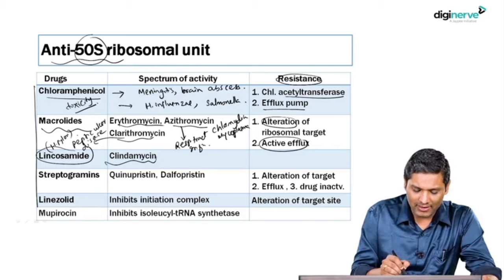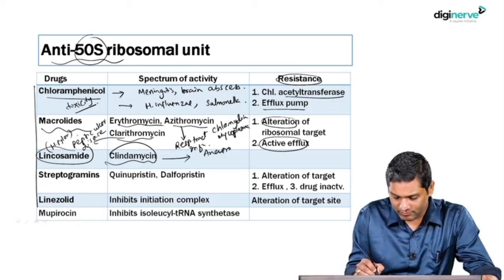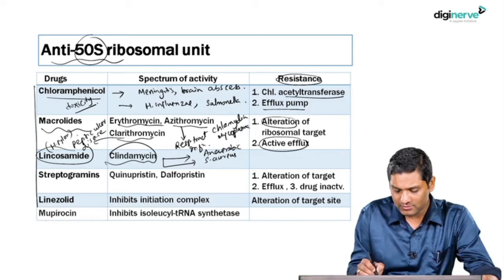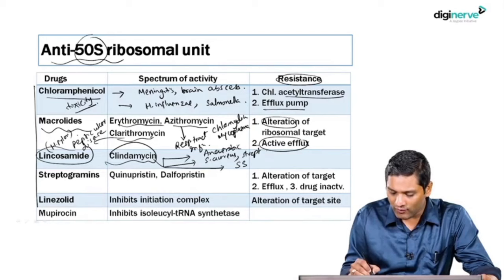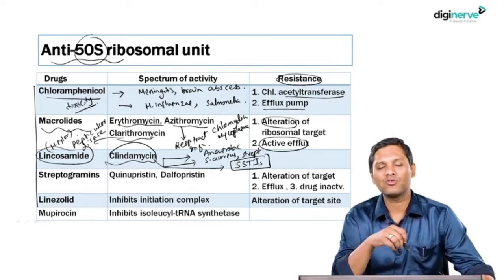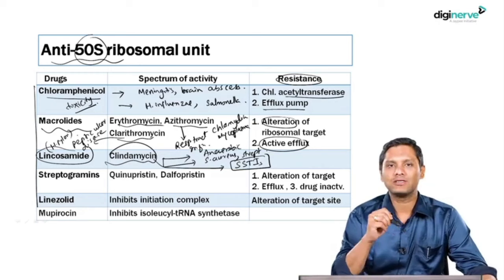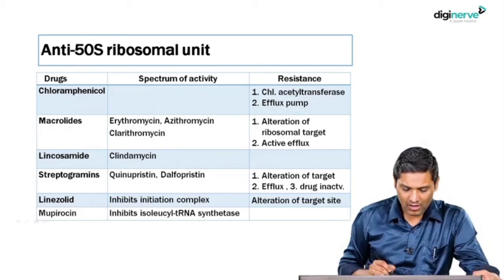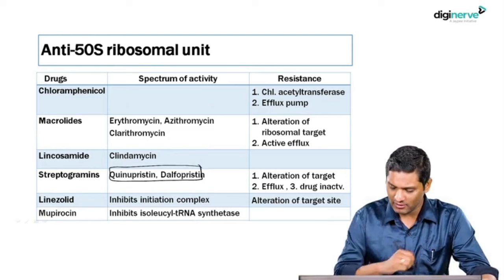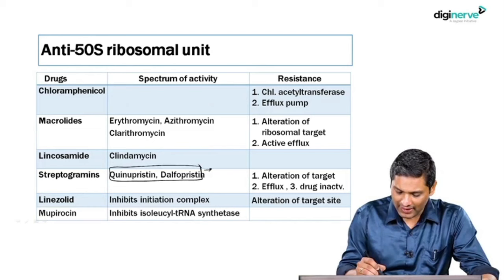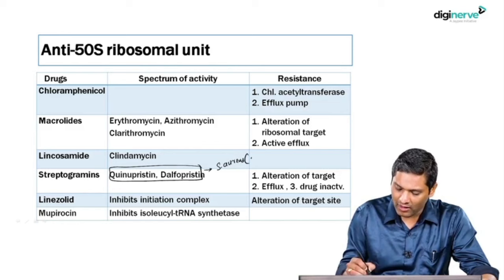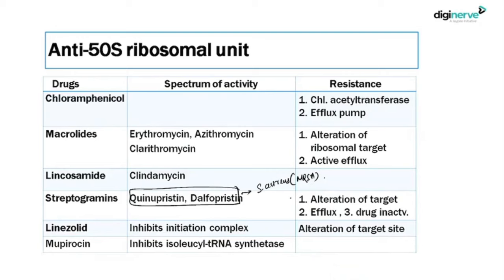The lincosamide class — classical example clindamycin — has good anaerobic coverage, also acts well on Staphylococcus aureus and beta-hemolytic Streptococcus. Clindamycin is good for skin and soft tissue infections due to Staph aureus or anaerobic infection. Streptogramins — quinupristin and dalfopristin — act well on Staphylococcus aureus including MRSA phenotype, and also on Enterococcus.